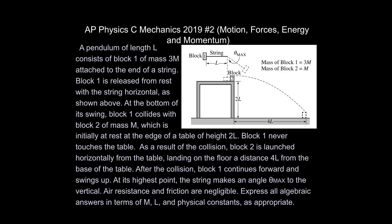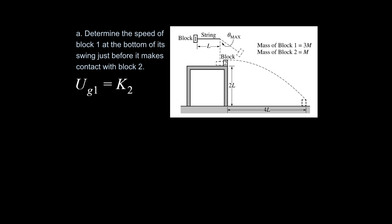Welcome back. We've been talking through concepts and problems in preparation for the AP Physics C Mechanics test. This is the 2019 FRQ number two. It starts out as a swing problem, then there's a collision, and a block goes flying off. It's mostly a conservation of energy problem with a little kinematics, forces, circular motion, and momentum. This problem is not that hard, though there is a lot going on.